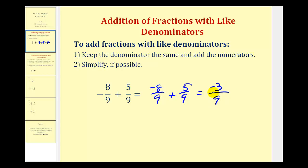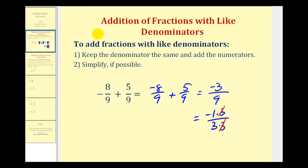This does simplify because these two share a common factor of three. We can show this by writing negative three as negative one times three, and nine as three times three. Three over three simplifies to one, and our sum is negative one-third.